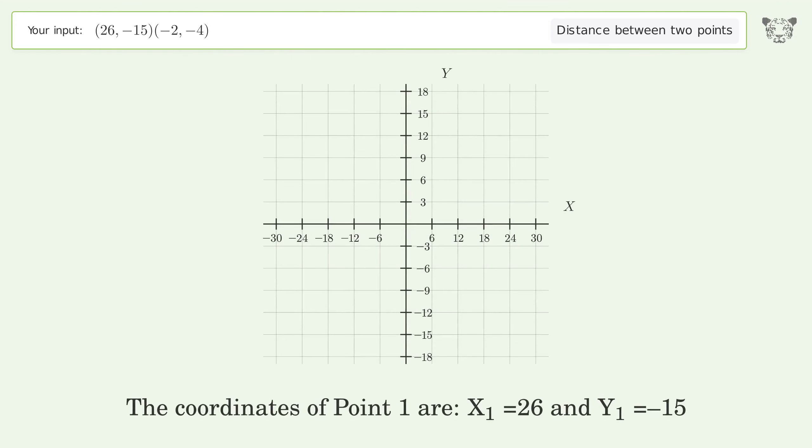The coordinates of Point 1 are x1 equals 26 and y1 equals negative 15. The coordinates of Point 2 are x2 equals negative 2 and y2 equals negative 4.